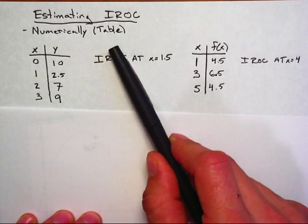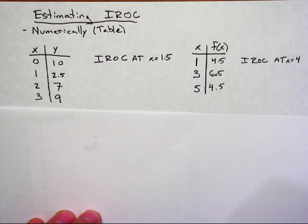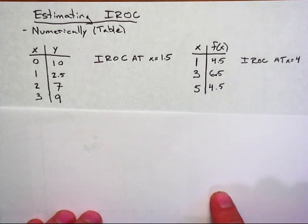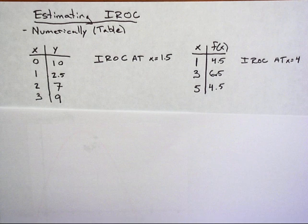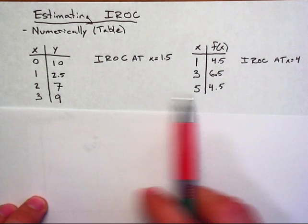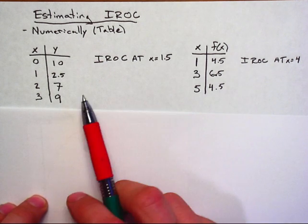So here are two different examples of a table. Pretty simple, nothing too exciting. And that's exactly what estimating the IROC you do. You just look at your table of values. You're not going to guess anything outside of these values. These are the only values that you get, so these are the only values you get to use.